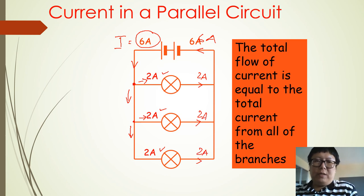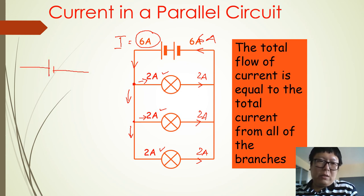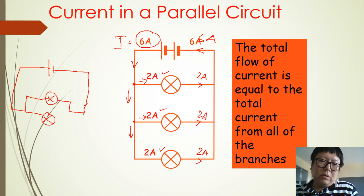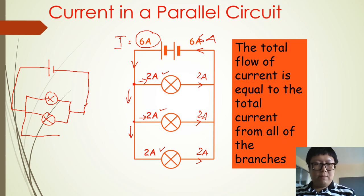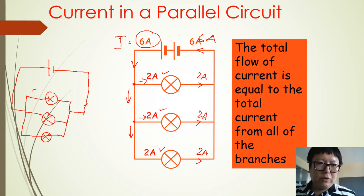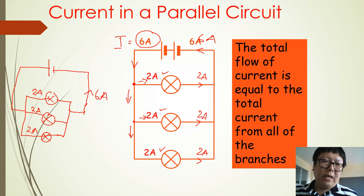If you are confused with the diagram, you can simplify it. Draw the electric source, then show the current splitting into one, two, and three branches. Two amps in each branch means two plus two plus two equals six amps total. The current entering the source is also six amps.